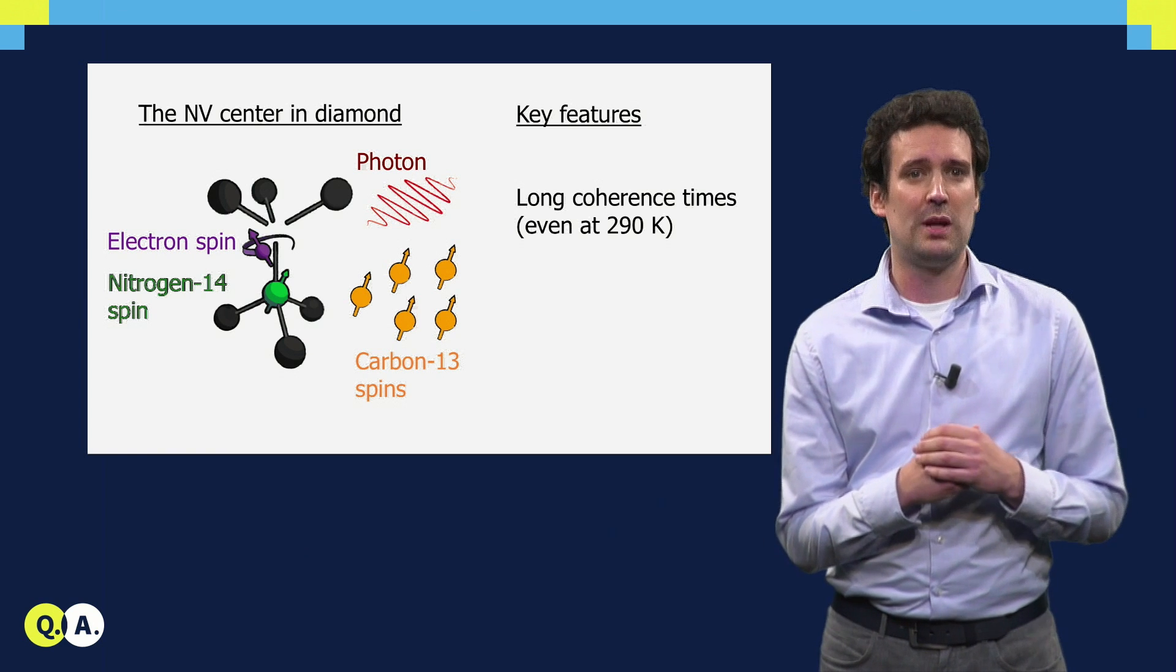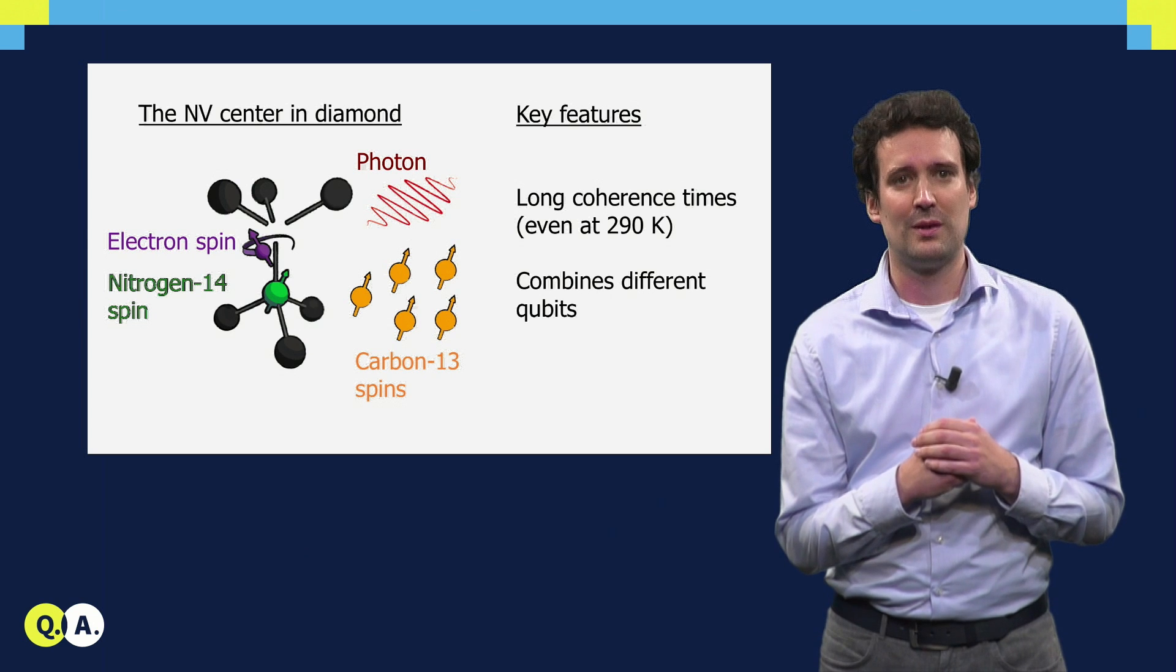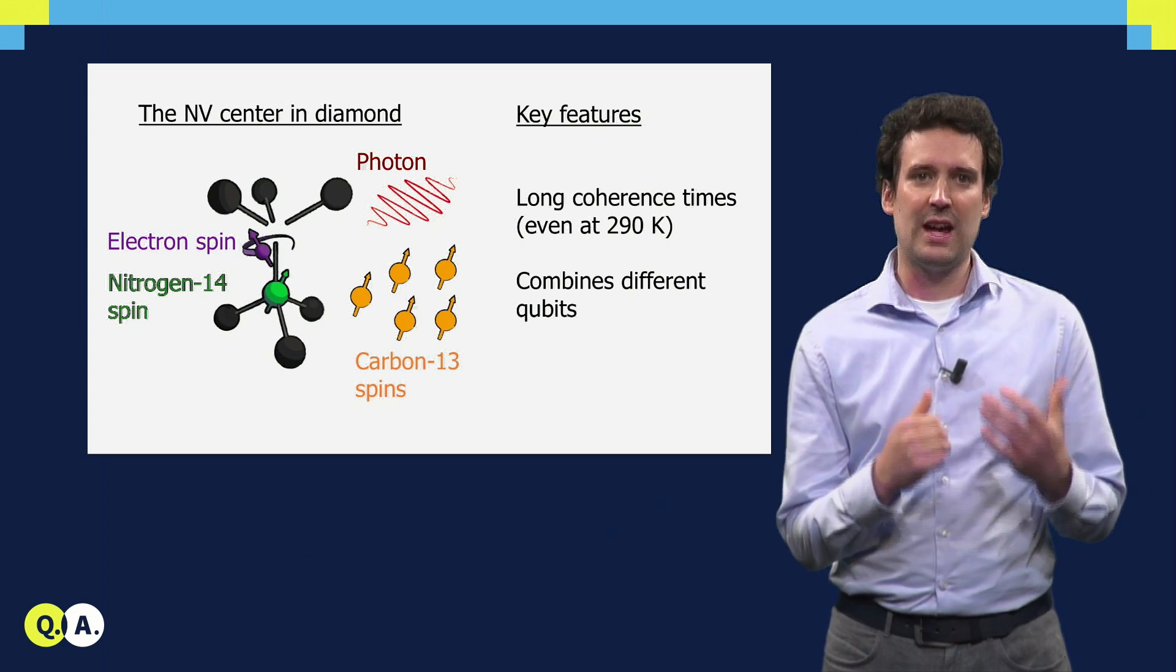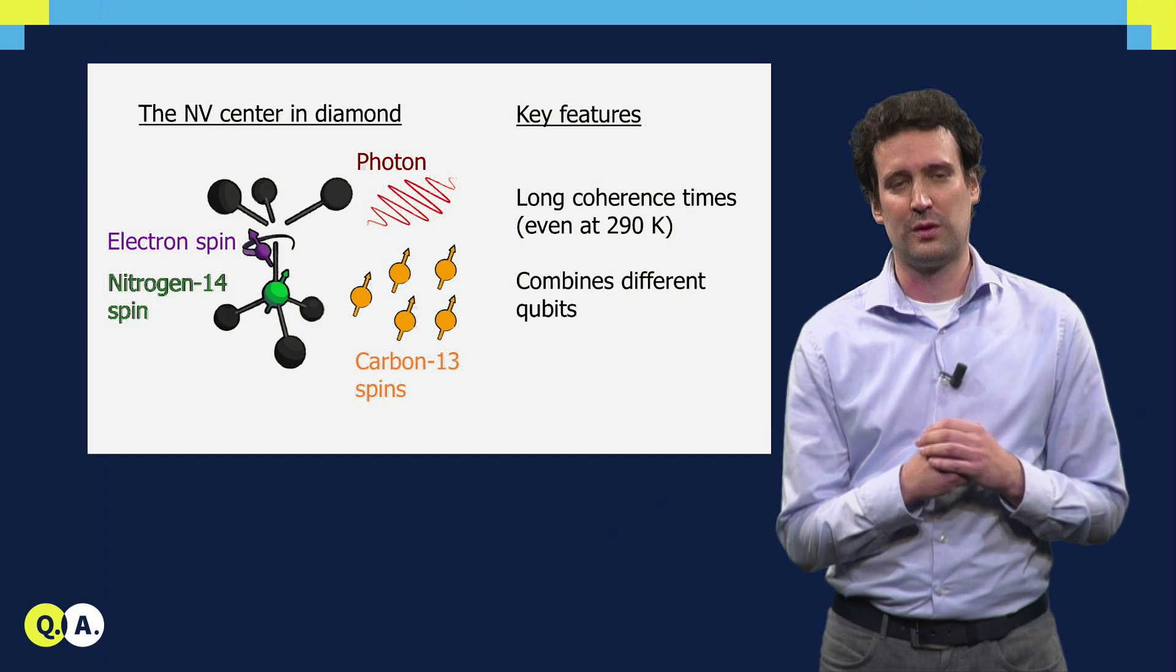Second, this electron spin is not the only qubit we have in the system. It couples to nuclear spins in the environment, which gives us extra qubits to store and process quantum information.